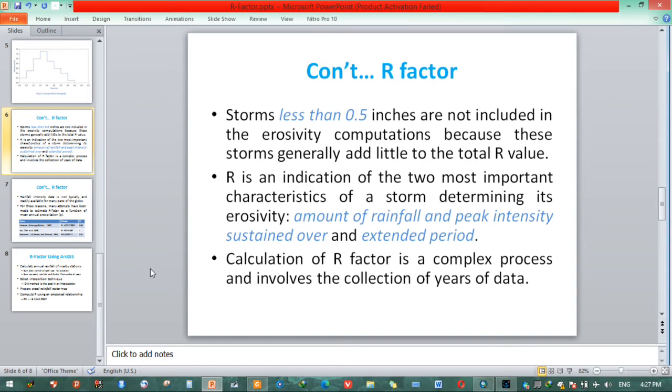Because these storms generally add little to the total R factor value. R is an indication of the two most important characteristics of a storm determining its erosivity. The first one is amount of rainfall and peak intensity sustained over an extended period.